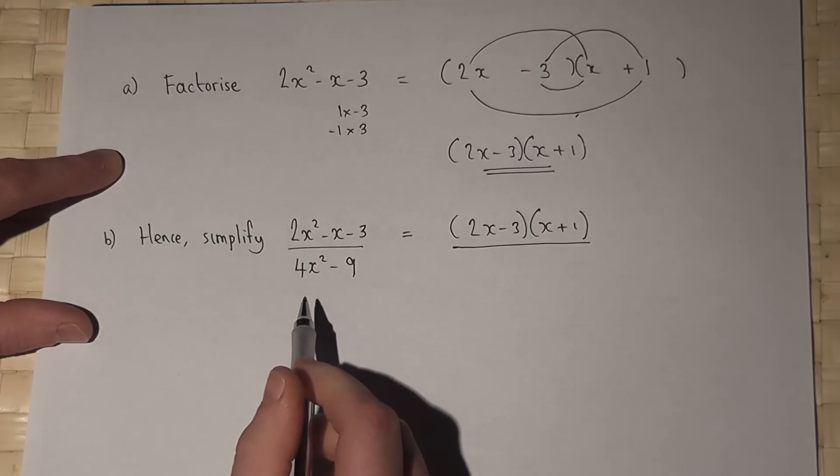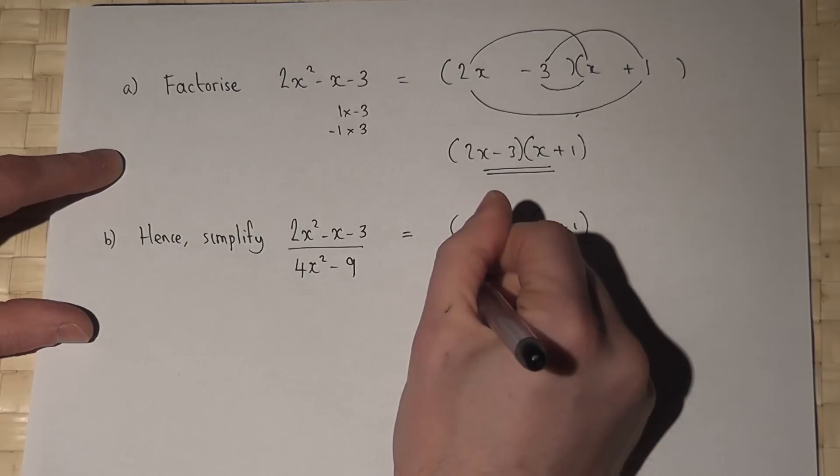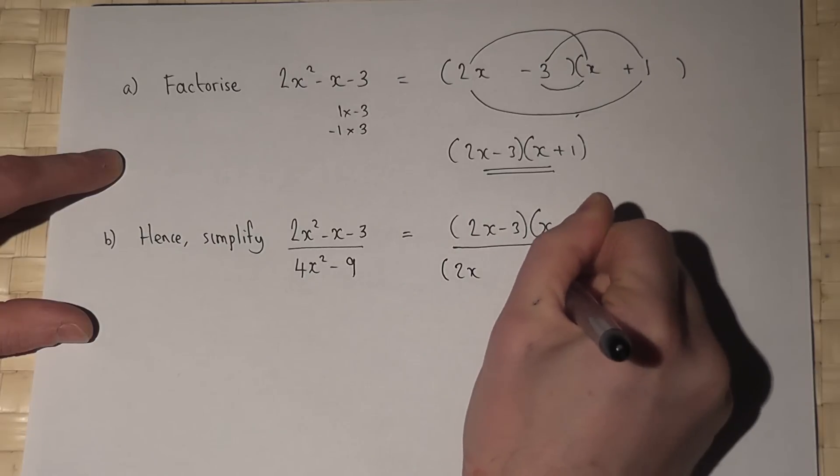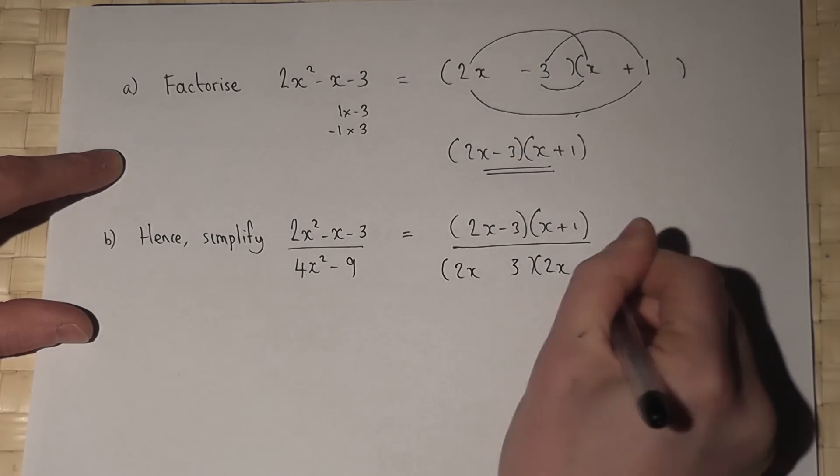Because 4x squared is 2x times 2x, and 9 is a 3 times a 3.